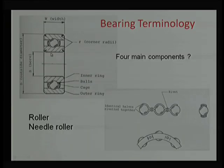The rolling elements can be balls, cylindrical rollers, or needle rollers. Needle rollers have a length-to-diameter ratio of roughly 10 or more — the length is at least 10 times the diameter. They are used where there is a diameter restriction but a need for larger load-carrying capacity. Wherever diameter is constrained and higher load capacity is required, needle roller bearings are a suitable choice.